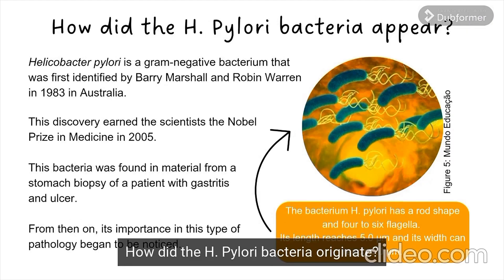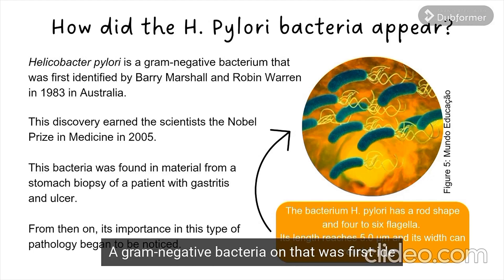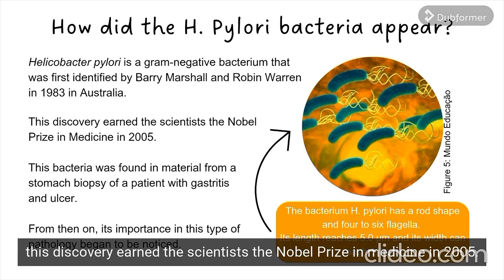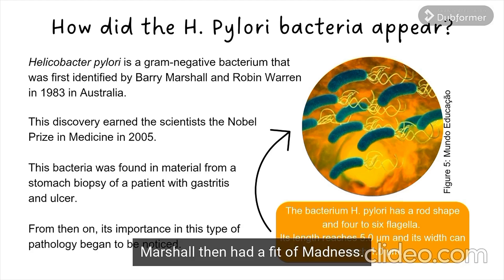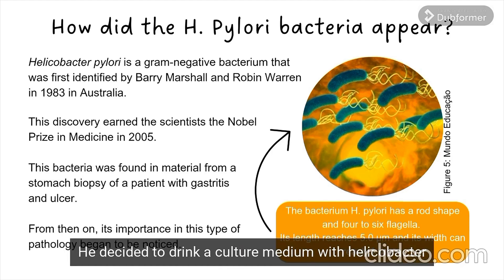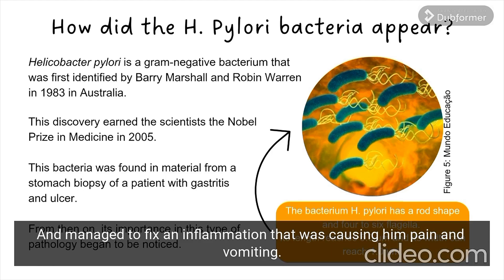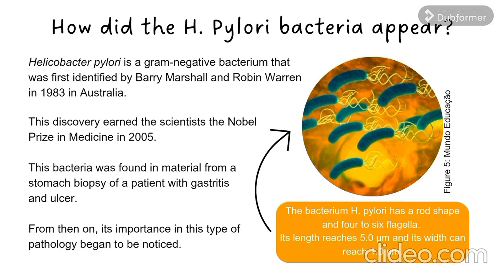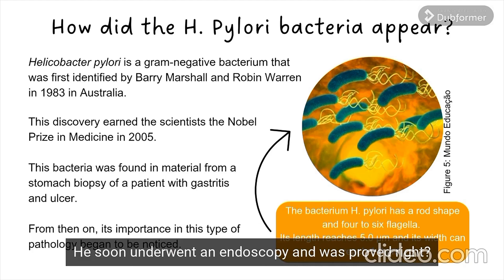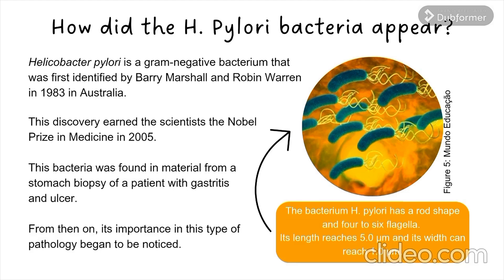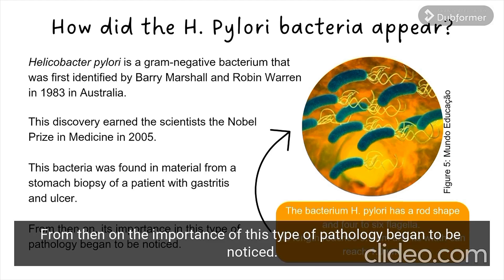How did the H. pylori bacteria originate? The H. pylori bacterium is a gram-negative bacterium that was first identified by Barry Marshall and Robin Warren in 1983 in Australia. This discovery earned the scientists the Nobel Prize in Medicine in 2005. Marshall then decided to drink a culture medium with Helicobacter pylori to prove that the inflammation was caused by a bacterium, and managed to develop an inflammation that was causing him pain and vomiting. He soon underwent an endoscopy and was proved right. At the time, stress and lifestyle were considered the main cause of peptic ulcers, but from then on, the importance of this type of pathology began to be noticed.